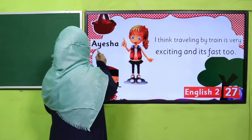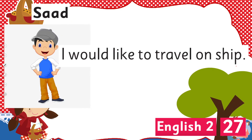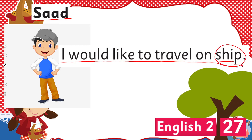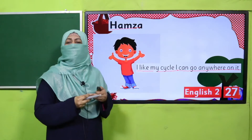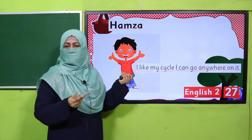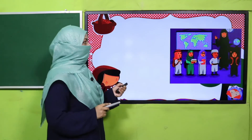Next is Aisha — she says: 'I think traveling by train is very exciting and fast too.' That is also her choice. The next is Saad — he says: 'I like my cycle; I can go anywhere on it.' Everyone is expressing his or her point of view about the question. Now it's your time — all of you will participate.